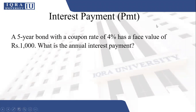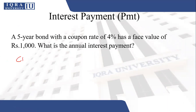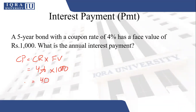Interest payment means the coupon payment. A five-year bond with a coupon rate of 4% has a face value of 1000. What is the annual interest payment? Simply calculate the coupon payment: coupon rate of 4% multiplied by face value of 1000 equals 40. So 40 is the annual coupon payment.